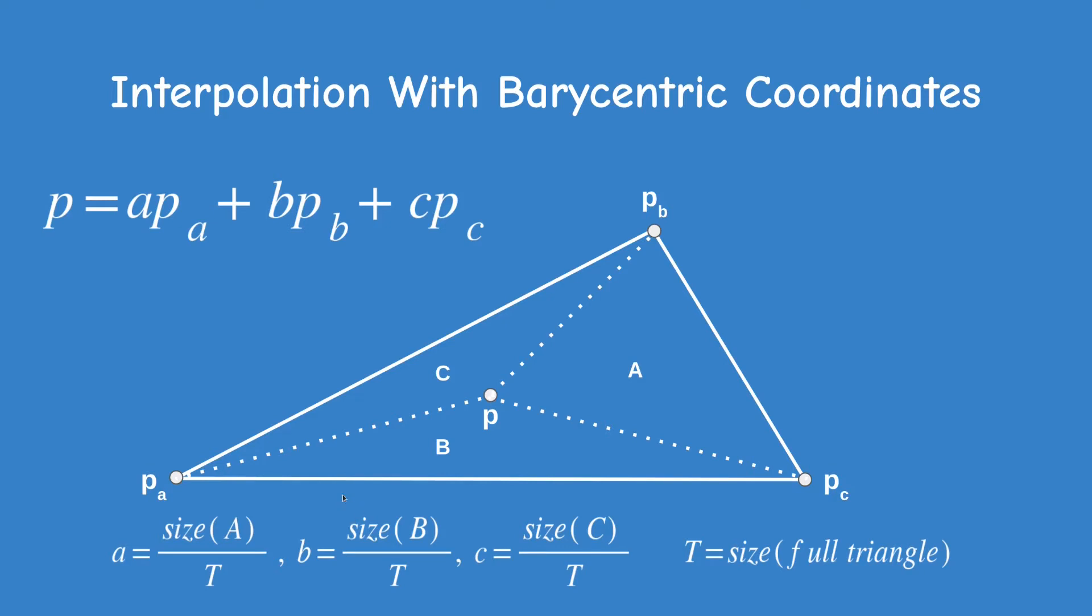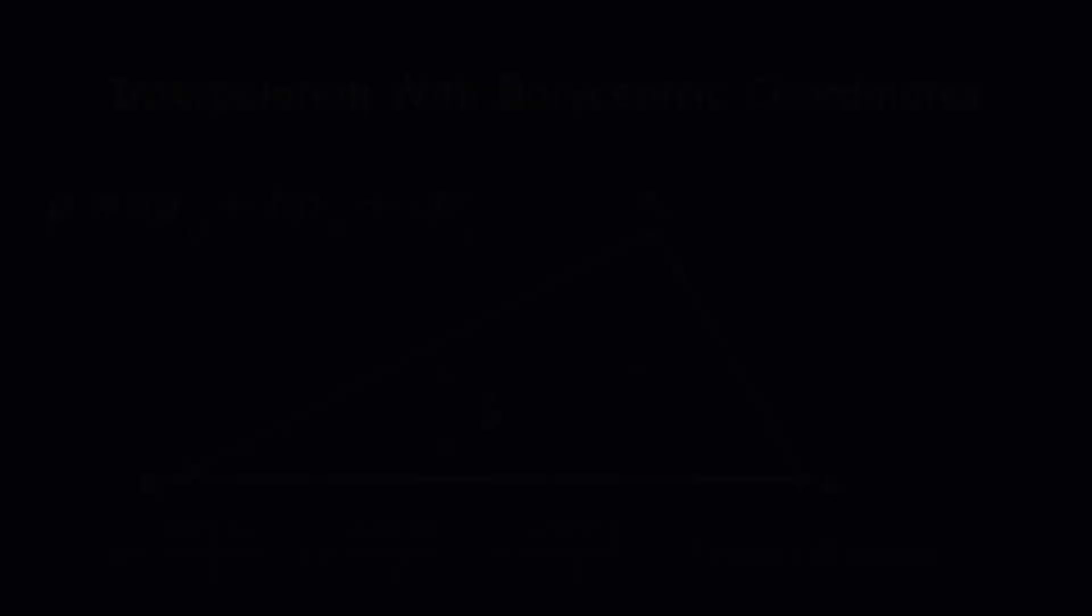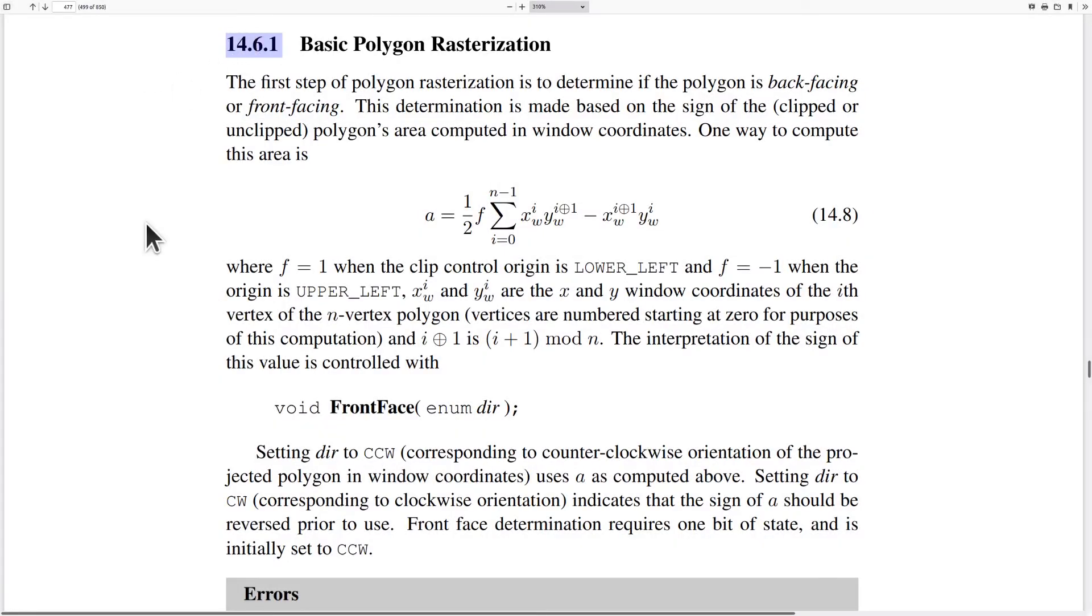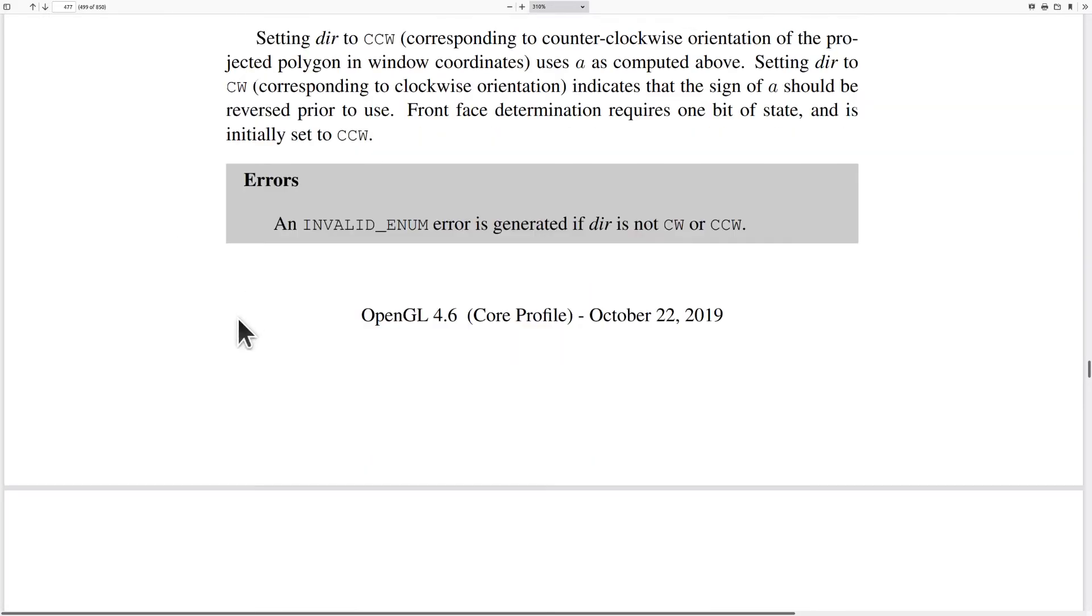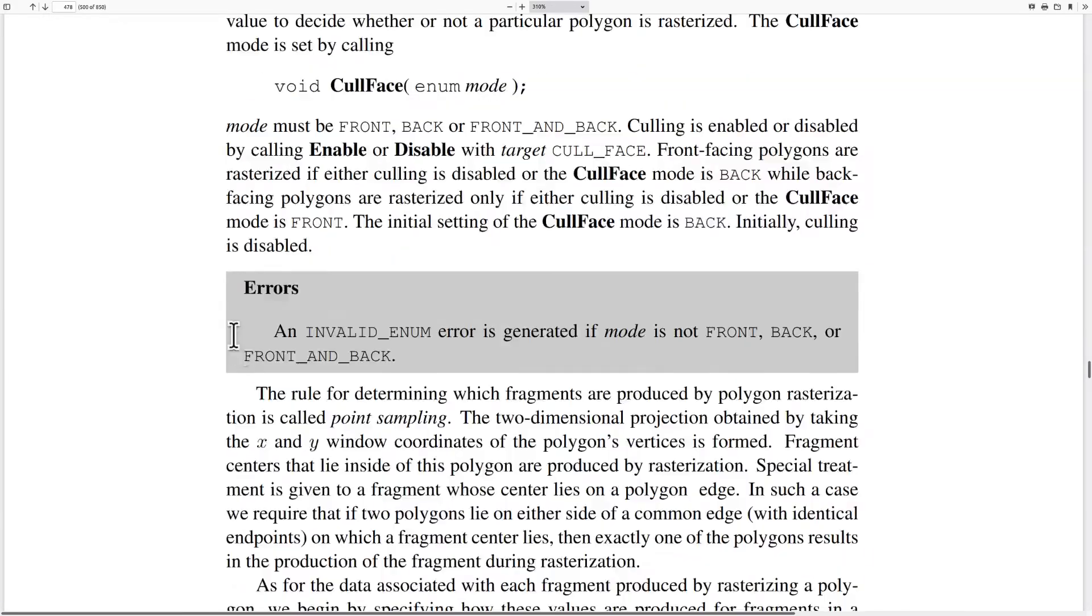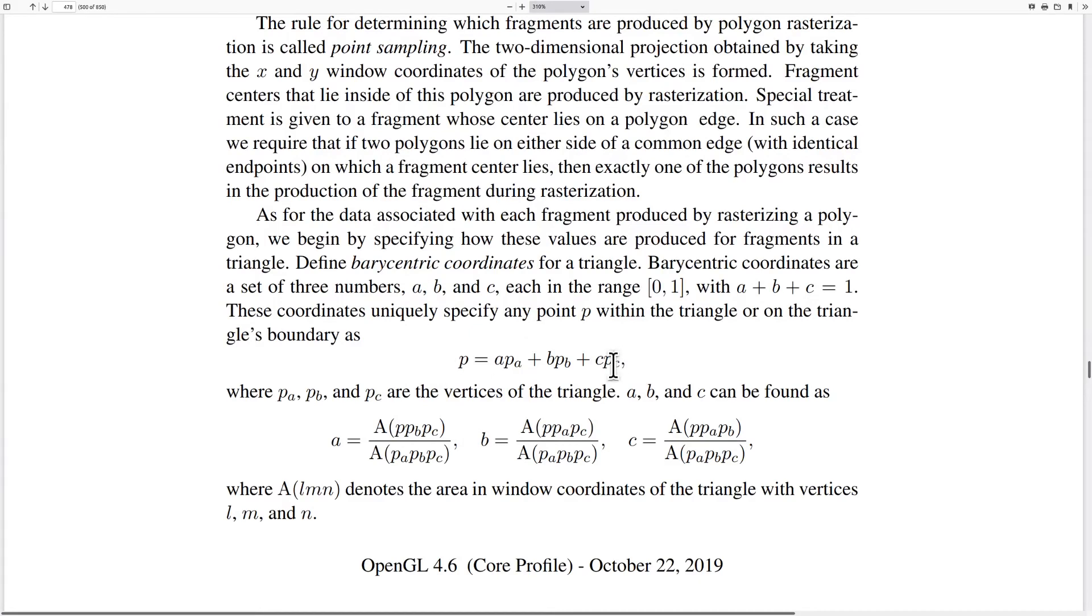At this point you may ask yourself what is the relevance to OpenGL. Turns out that the rasterizer employs this method of calculating barycentric coordinates in order to perform interpolation of vertex attributes. You can read more about it in section 14.6.1 of the OpenGL spec.